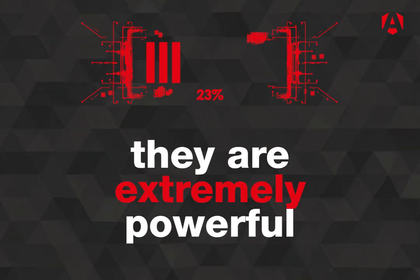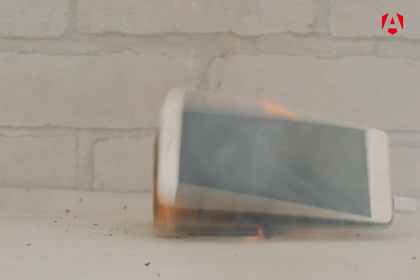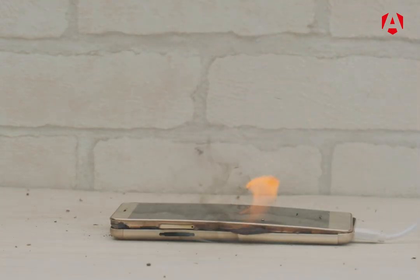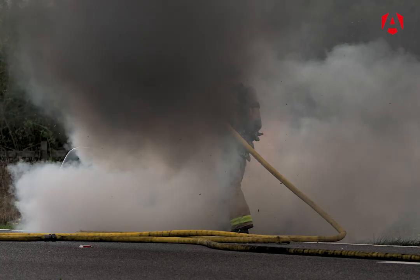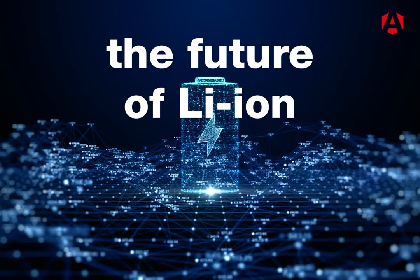As you can see, Li-ion batteries can hold a dangerous amount of energy. When they fail, this energy is released, producing an explosion, fire, and poisonous gases. Li-ion battery fires are also very difficult to extinguish.